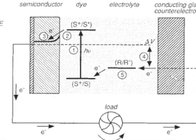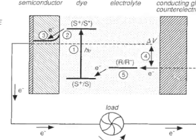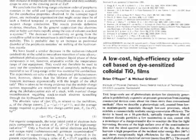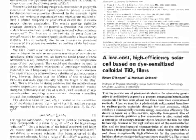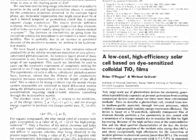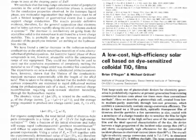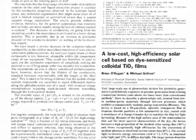The principle of the DSC was shown by Professor Grätzel in 1991 and attracts great interest due to its potential as a low-cost alternative to the traditional silicon solar cell.